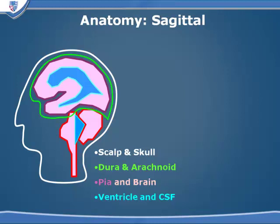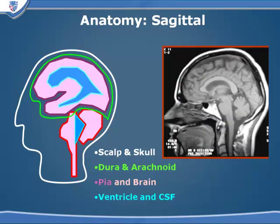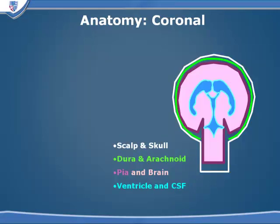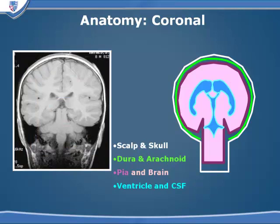These crude cartoons illustrate the different layers, with white being the scalp and skull, the green line being the dura and the arachnoid membrane which are normally in contact with each other, the purple color being the pia, the pink being the brain, and blue a schematic of the ventricular system. This looks very much like a normal sagittal T1-weighted MR image. We also want to review the coronal anatomy and remember these different layers and how a hematoma may be trapped between any of these layers.